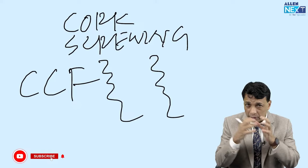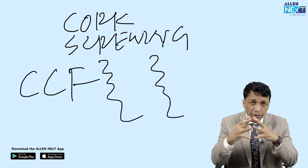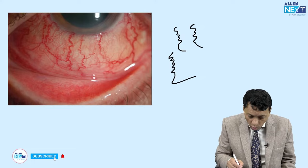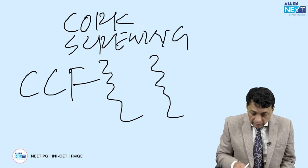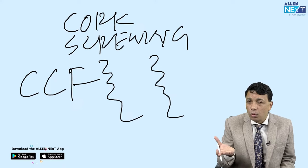Whenever there is a connection between high arterial blood flow like the carotid artery and the low blood flow of the cavernous sinus, this abnormal connection gives rise to the engorged finding of the conjunctiva with corkscrewing of blood vessels. This is CCF — very typical. You will typically have an older patient who has a spontaneous CCF, and this is the anterior segment finding we look for.